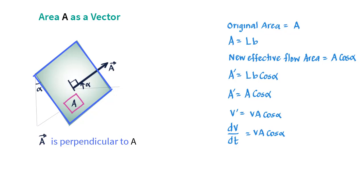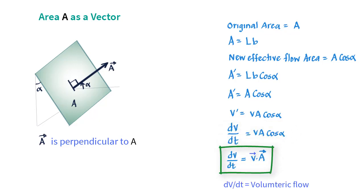With this idea, that is area A being a vector, we can then rewrite this equation as dV/dt is equal to V dot A, or the dot product of velocity vector V and area vector A.